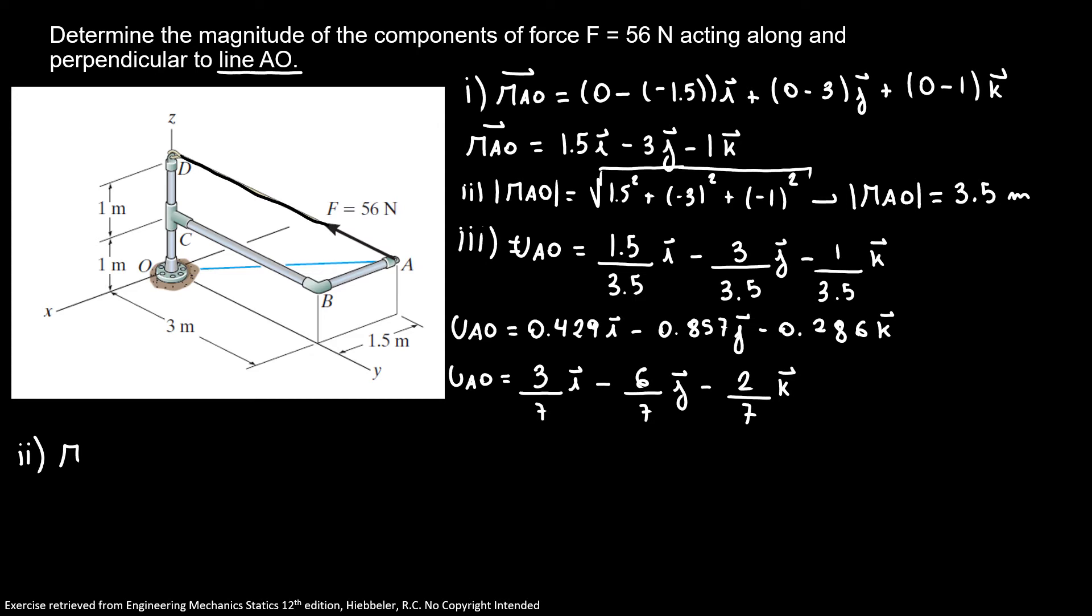So the position AD is equal 0 minus negative 1.5 I plus 0 minus 3 J plus 2 minus 1 K. So my position vector AD is equal 1.5 I minus 3 J plus 1 K.